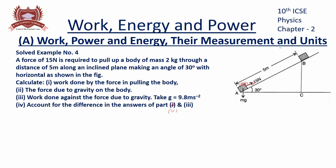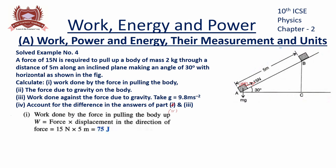So work done we know is force multiplied by the distance in the direction of the force. It is pretty simple. It would be 15 newtons multiplied by 5 meters giving us the work done as 75 joules.